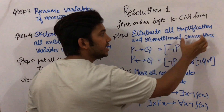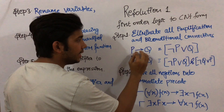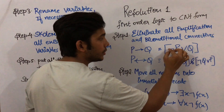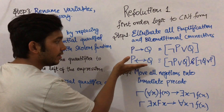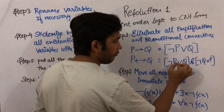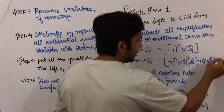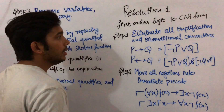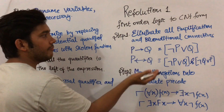In the first step we are going to eliminate all implication and biconditional connectives. If P implies Q is given, then we can write this as negation of P or Q. And if P biconditional Q is given, then we can write this as (negation of P or Q) and (negation of Q or P). So this was the first step: eliminate all implication and biconditional connectives.